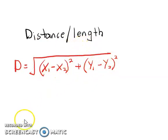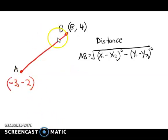Now let's do an example. We are going to calculate the length of AB, where A has the coordinate (-3, -2) and B has the coordinate (8, 4). Either one can become number one or number two.